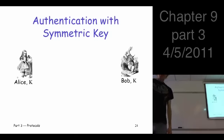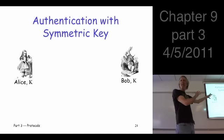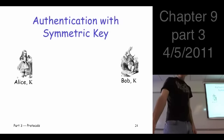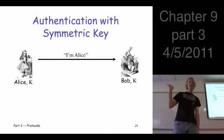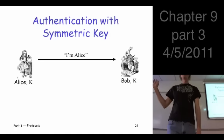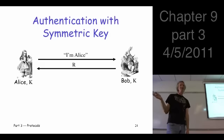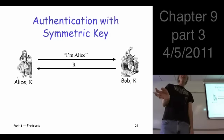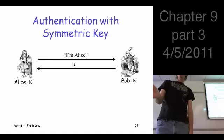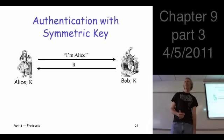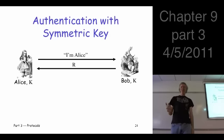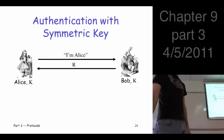So Alice and Bob share the key K. Alice comes along and says, hey, I'm Alice. Bob sends a nonce R, a randomly chosen value. What's the simplest thing Alice could do to prove that she knows the key K that Bob could verify? Encrypt it and send it back, just like the man in the middle thing.